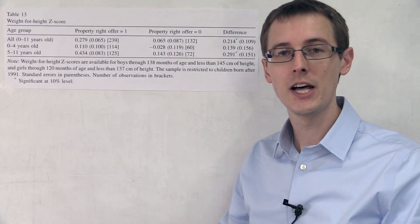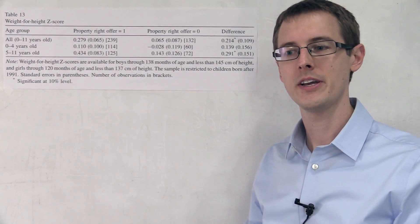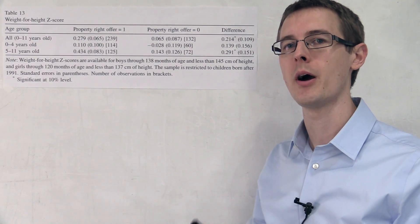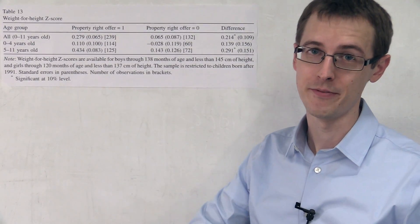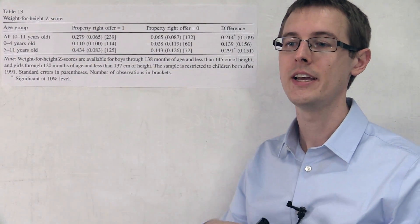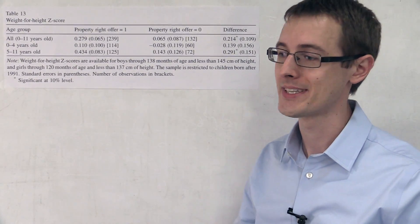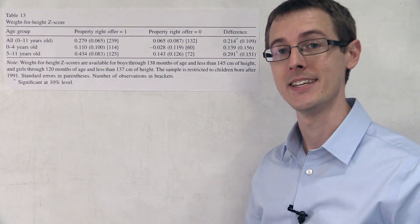You have to actually fill out the paperwork and apply to get a title. So they had the option of getting property rights, but they didn't actually receive it. They did not comply with treatment — they were assigned to get property rights, but they didn't.